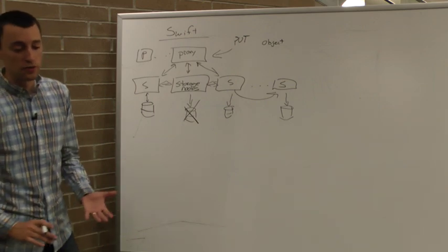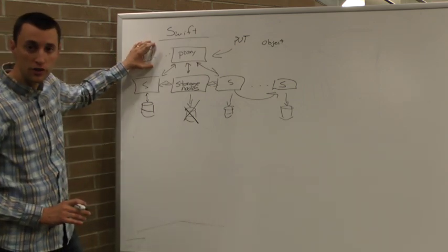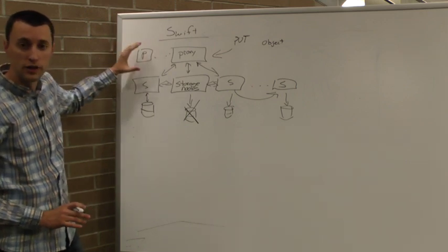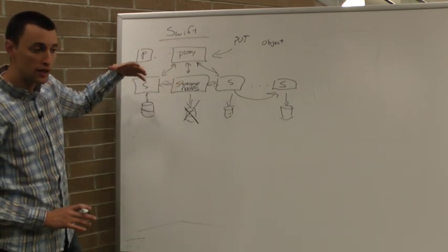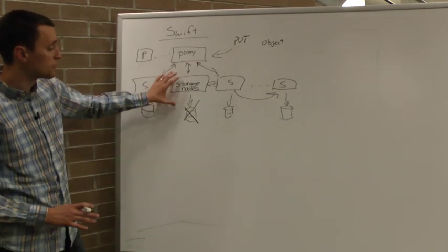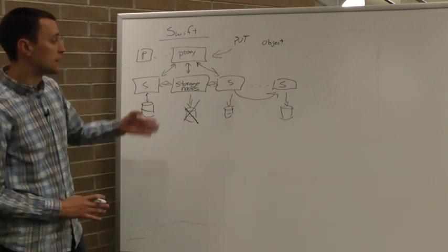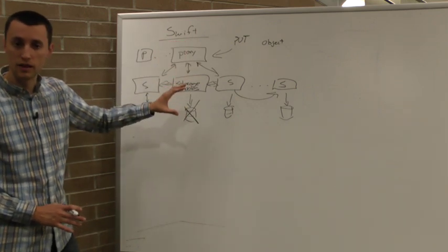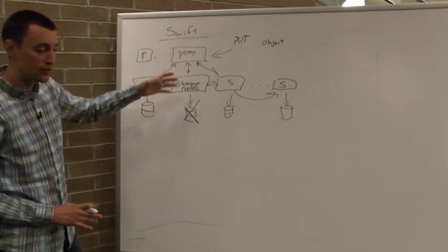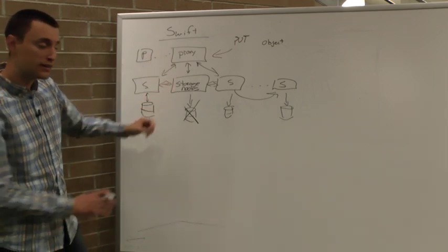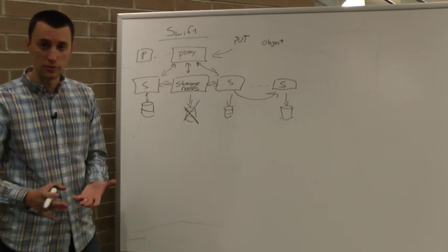The really great thing about this modular design in Swift is that if you need more, you can add more. So if you need to expand the end-user throughput and the actual amount of connections you're able to support, you can expand out proxy servers. If you need to increase the amount of overall storage you have provisioned in your cluster because you're running out of space, you can add new storage nodes. And you can adjust these to match your real-world use case. So if you have something that is demanding very high throughput but relatively not a lot of storage, then you can maybe get a little heavier on proxy nodes. If, however, you want to do very cheap and deep storage, you may just have a few proxy nodes but need to have an enormous number of storage nodes and associated hard drives so you can store all of your data. Swift gives you the flexibility to do this.